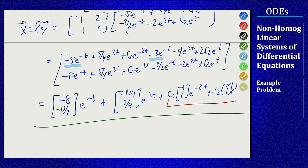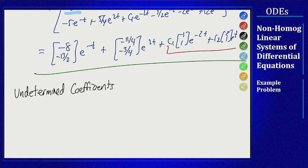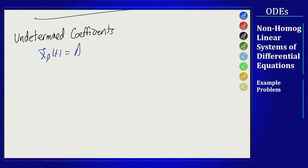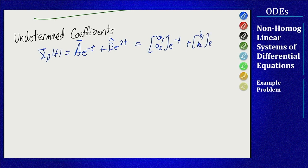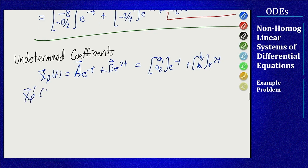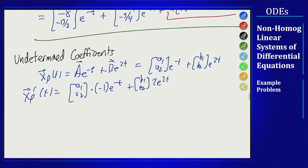Method 2 is undetermined coefficients. We make a guess based on the forcing terms. Since the right-hand side has e^(-t) and e^(2t), and neither solves the homogeneous problem, we guess x_p = [a₁, a₂]e^(-t) + [b₁, b₂]e^(2t). The derivative of this guess is [-a₁, -a₂]e^(-t) + [2b₁, 2b₂]e^(2t).